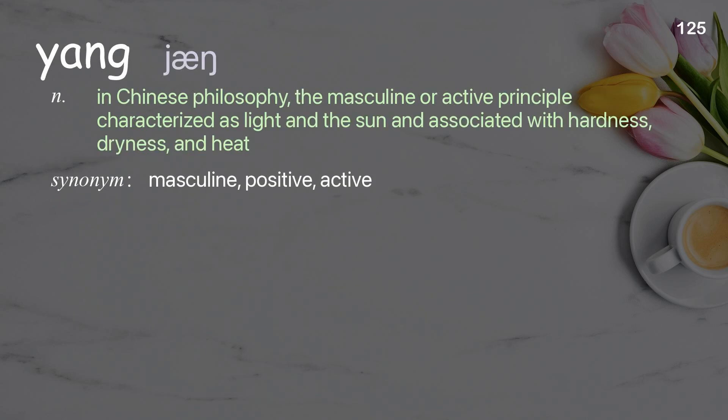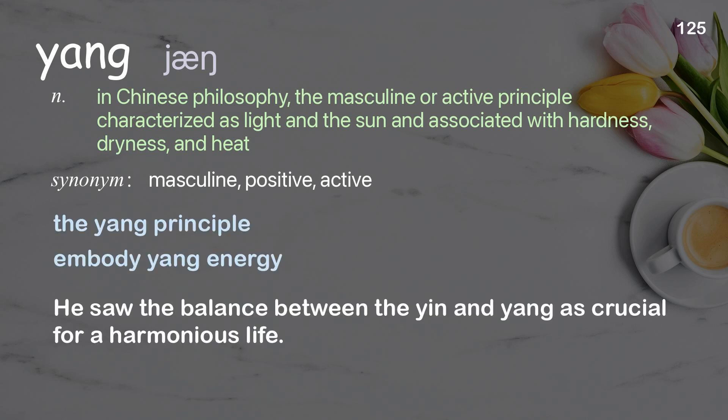Yang: in Chinese philosophy, the masculine or active principle characterized as light and the sun and associated with hardness, dryness, and heat. Examples: He saw the balance between the yin and yang as crucial for a harmonious life.